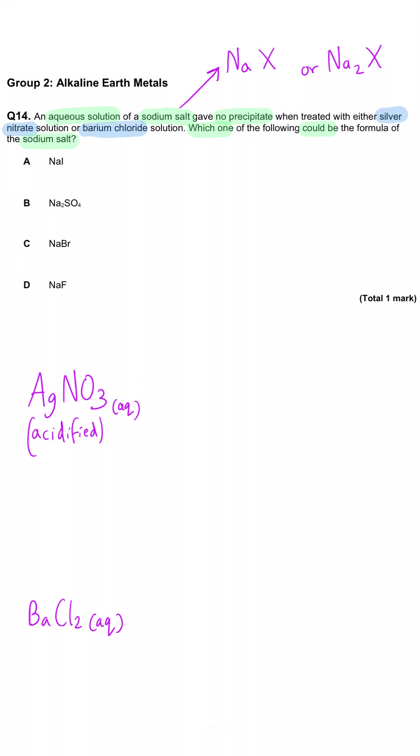So these all contain sodium, which means that we can really forget sodium. We're comparing the negative ion and we're looking to see whether that would make precipitates with either of the two chemicals added. So iodide,